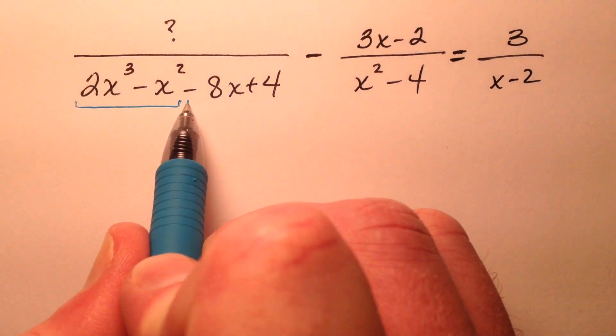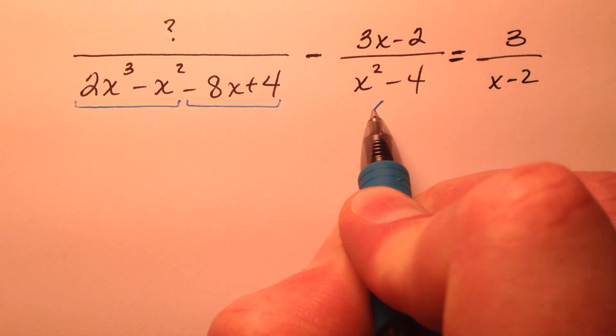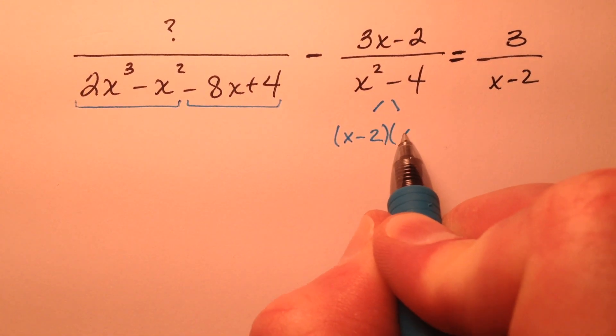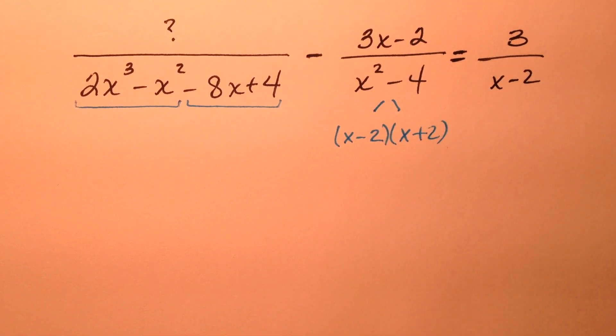So what I can do here first is factor by grouping, and then on this one, it looks like it's difference of squares. So x minus 2, x plus 2.